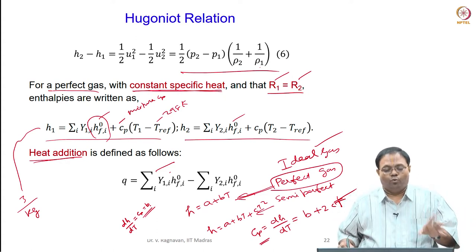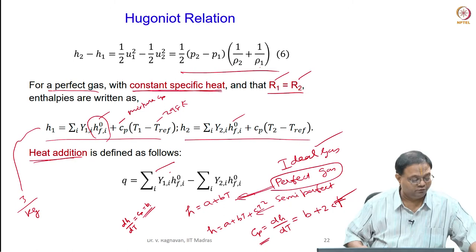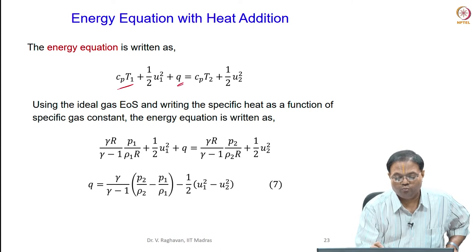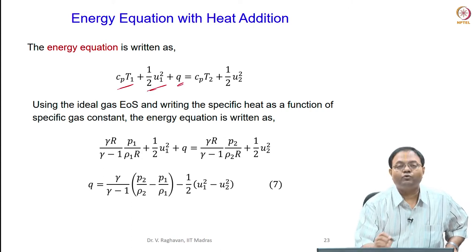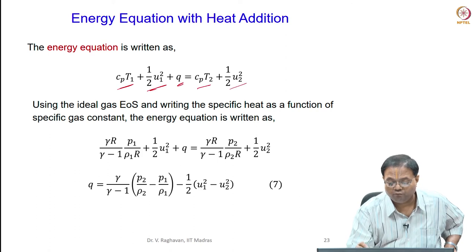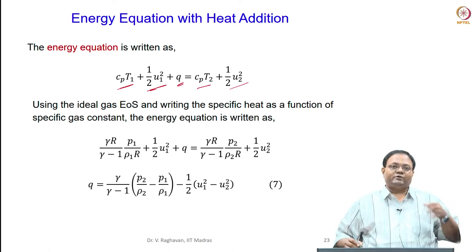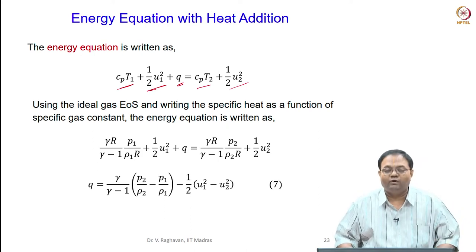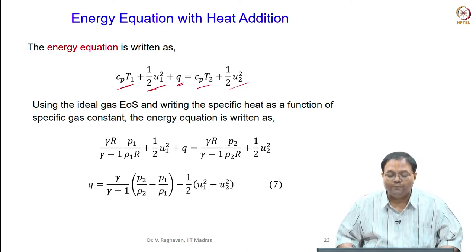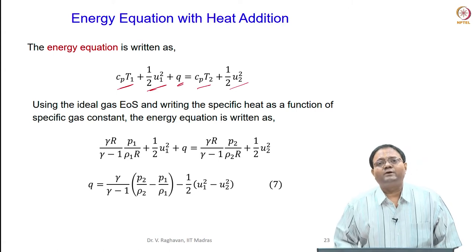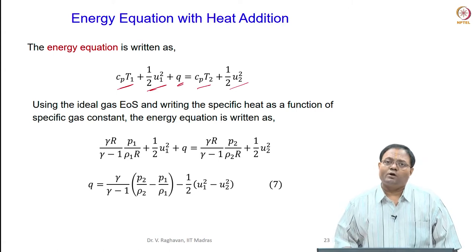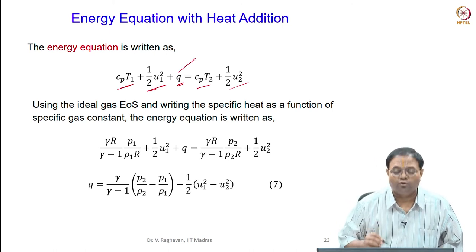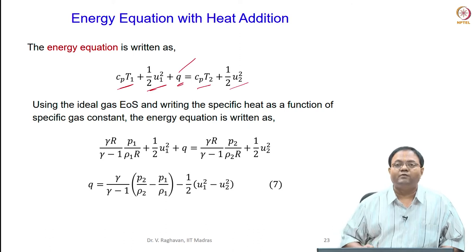This term is absorbed into heat addition Q. So the energy equation becomes: Cp·T₁ + Q + ½u₁² = Cp·T₂ + ½u₂². Instead of writing in terms of enthalpy, we write in terms of temperature, recognizing that the difference in formation enthalpies of reactants and products gives the heat of combustion Q.